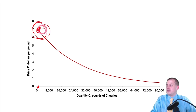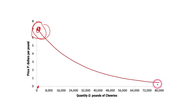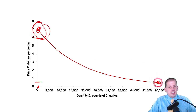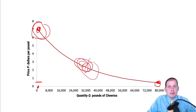Up at the high-price end, not many people are willing to pay a lot for Cheerios. Down at the low-price end, around 80,000 people are willing to pay 50 cents per pound — everybody is fine with a super low price. But if companies actually sold Cheerios for that little, they'd run out pretty quickly. This line shows preferences for everyone in society, and somewhere in the middle is a sweet spot where the company can choose the best price based on their costs.